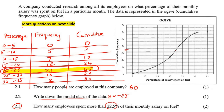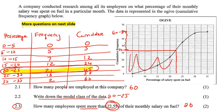Now we've got to read the question carefully — how many employees spent MORE than 22.5%? The value of 34 represents everyone up to 22.5%, which is less than 22.5%. We know there is a total of 60 people, so the amount spending more than 22.5% would be 60 minus 34, which equals 26 people. If the question had said less than 22.5%, the answer would simply be 34.